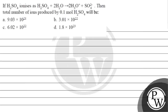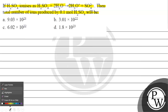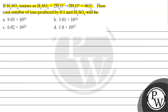Hello, let's read this question. The question says: if H2SO4 ionizes as H2SO4 plus 2H2O gives 2H3O⁺ plus 1 sulfate ion, then the total number of ions produced by 0.1 mol of H2SO4 will be? Options are given to us.